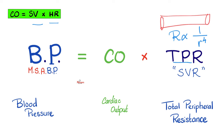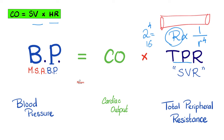If the radius decreases to half its original value, the resistance increases 2 to the power of 4 — it becomes 16 times greater. So vasoconstriction decreases the radius, increases resistance, increases total peripheral resistance, and blood pressure goes up. Conversely, vasodilation increases the radius, lowers resistance, and lowers blood pressure.